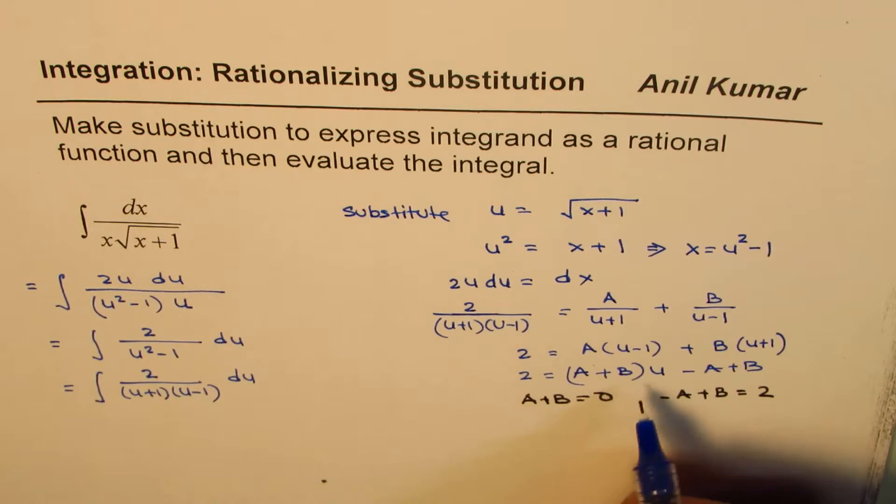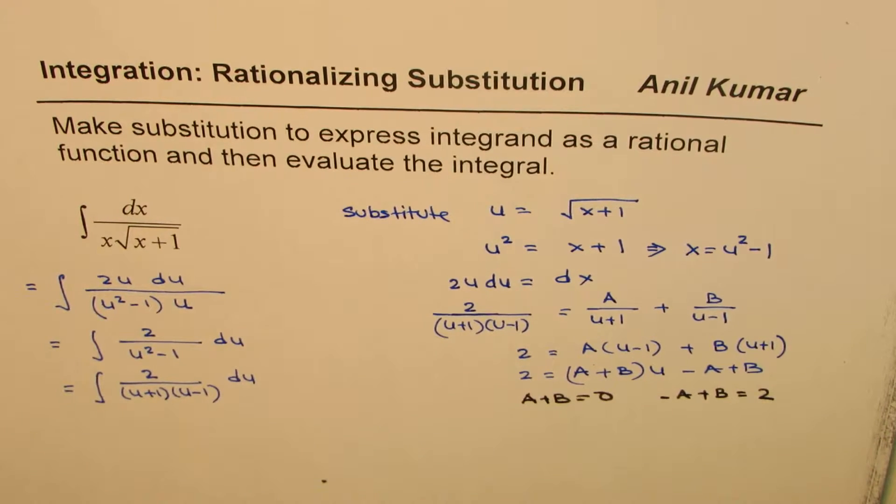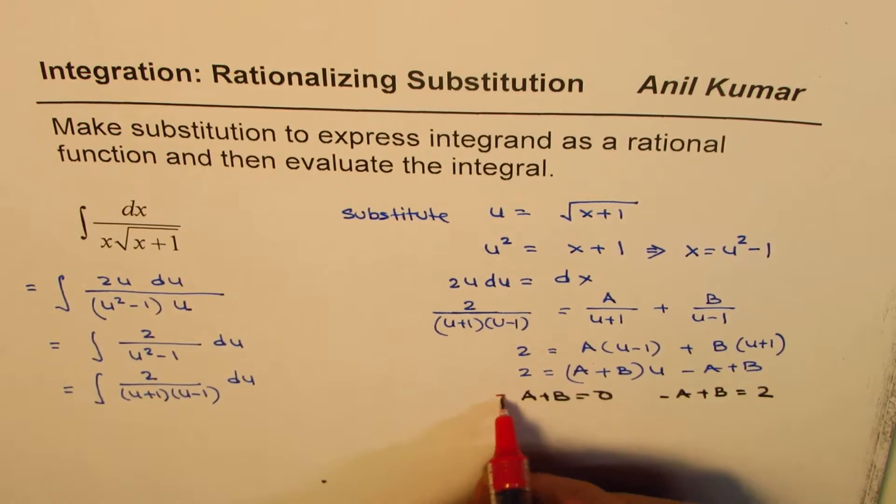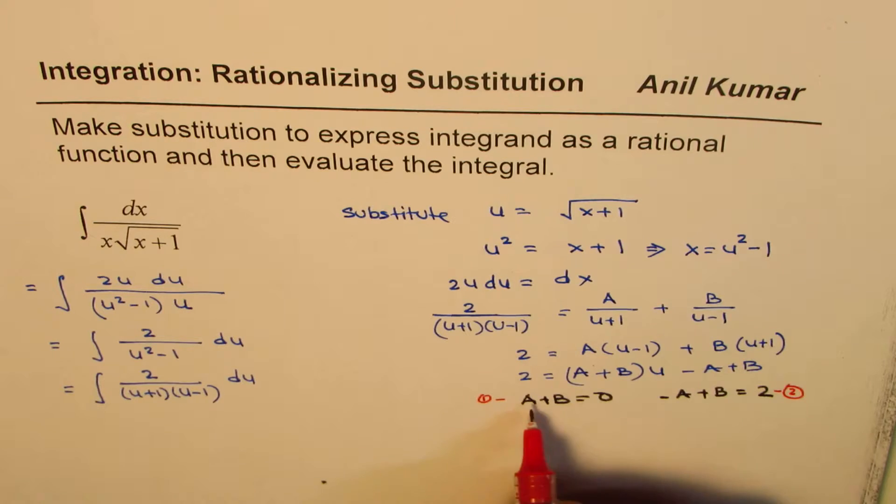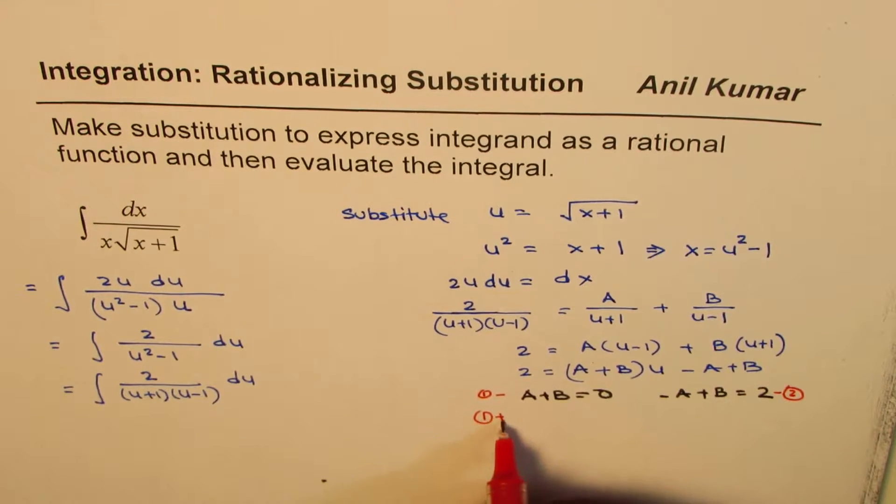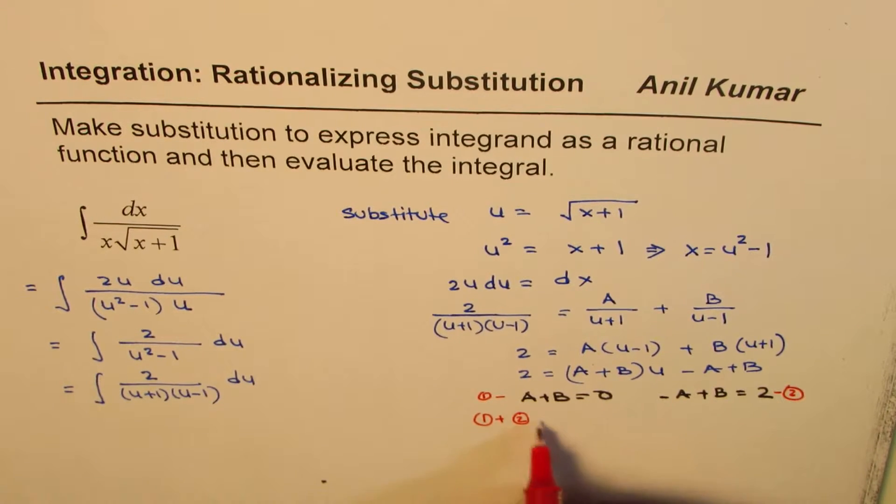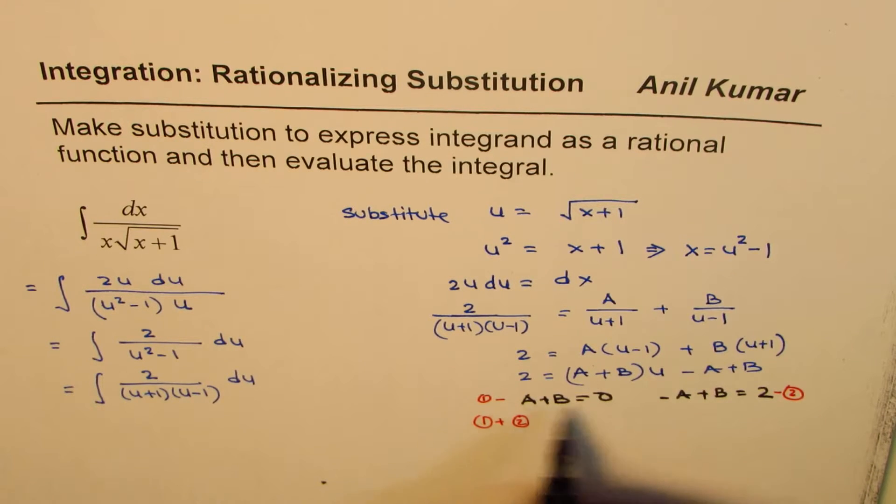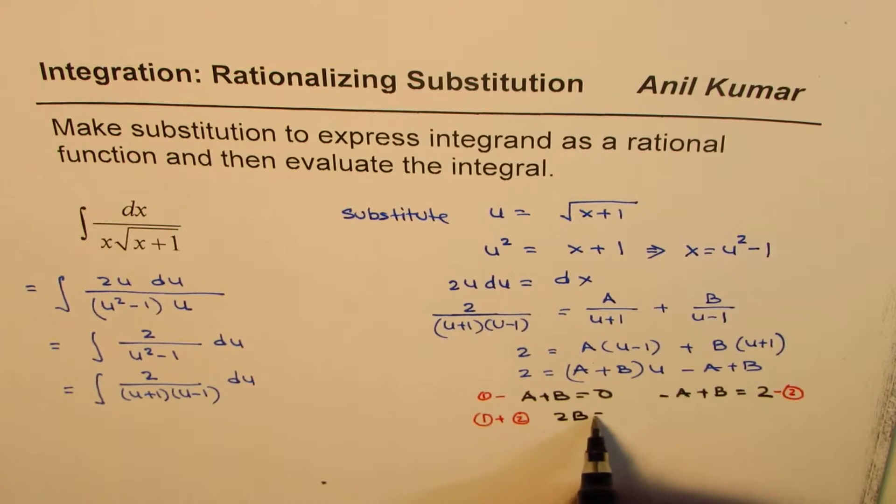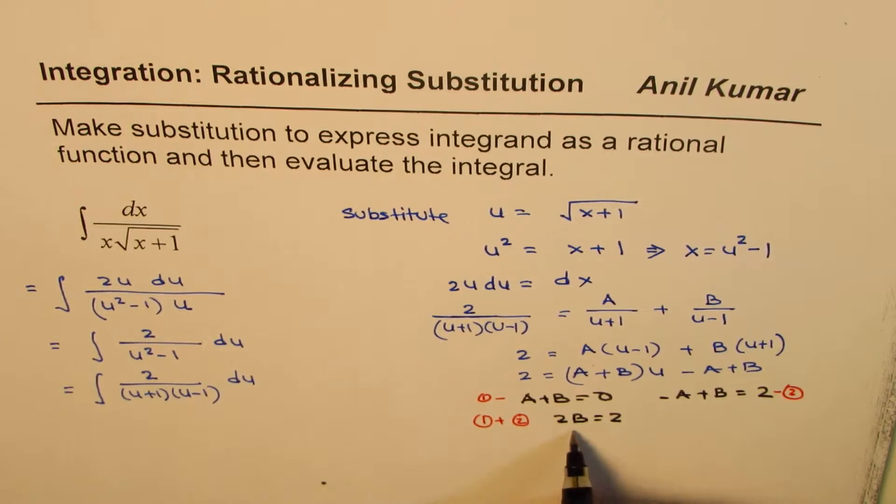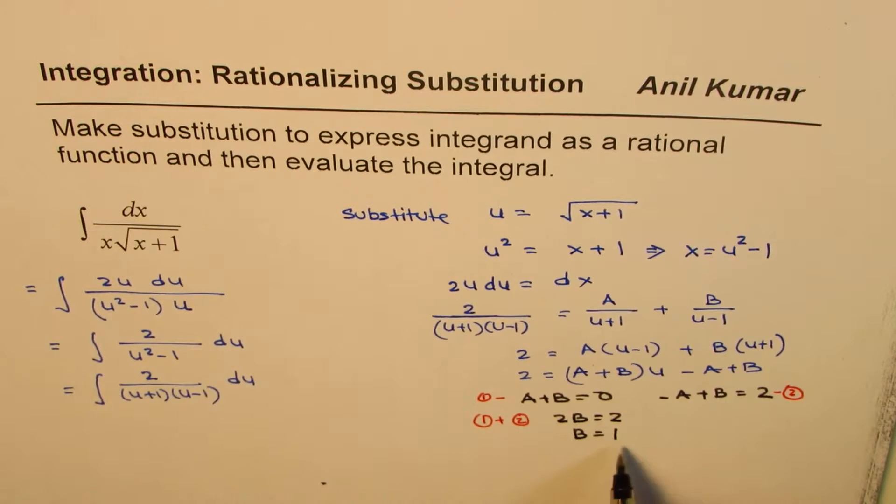Anyway so at present what we have is we have two equations here. Let me number that. Equation 1 and equation 2. If I add them that is if I add equation 1 and equation 2 what do I get? I get a minus a is 0. I get b plus b which is 2b equals to 2 and that gives me b equals to 1.